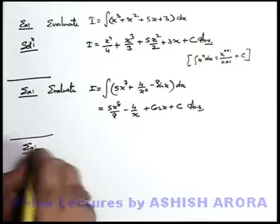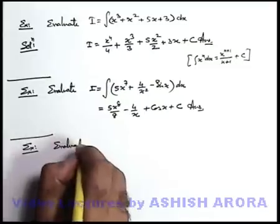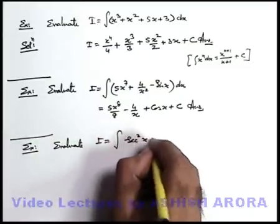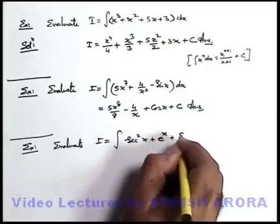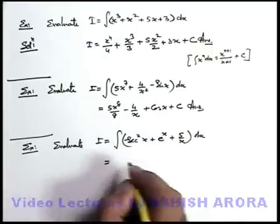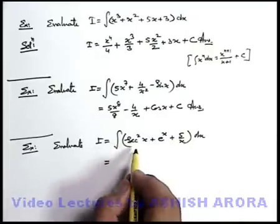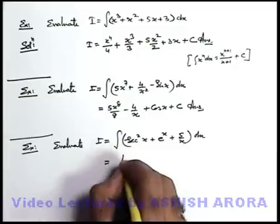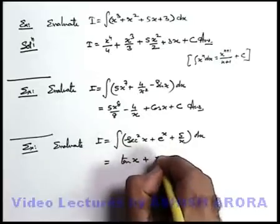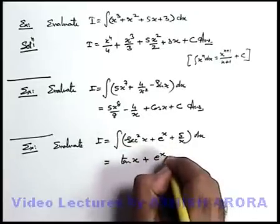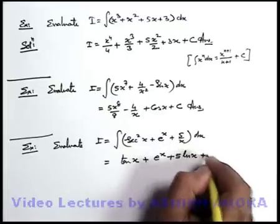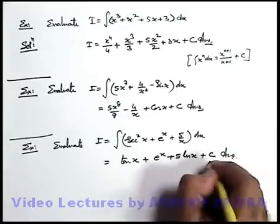Let's take up another example: evaluate I = ∫(sec²x + e^x + 5/x)dx. Here again we use the direct integration results. Integration of sec²x = tan x; e^x integrates as e^x; and 5·(1/x) integrates as 5·ln(x), plus C. This will be the answer to this question.